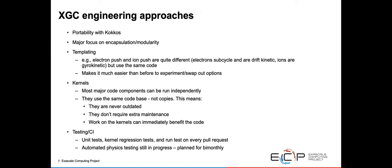Our approaches have been portability with Kokkos, a major focus on encapsulation and modularity, and a lot of templating. For example, the electron push and ion push are quite different, but we're able to use the same code for them. This makes it easier to experiment and swap out different options. We also have each of our major code components able to be run independently using the same code base, not copies. That means anytime someone is working on these individual components or if we give them out to vendors to look at a specific architecture, they're never outdated, don't require extra maintenance, and any work done on those kernels can immediately benefit the code. We've also revamped our testing and CI with unit tests, regression tests, run tests, and automated physics testing still in progress.